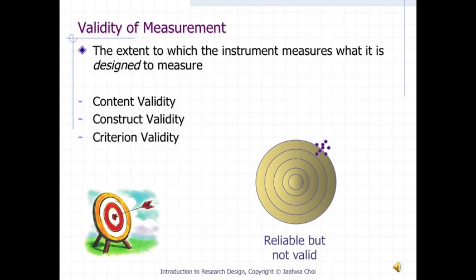Validity of measurement is the extent to which the instrument measures what it is designed to measure. Validity of measurement can be decomposed into content validity, construct validity, and criterion validity. We can better understand the difference between reliability and validity by the picture below, which represents a case that is highly reliable but less valid.